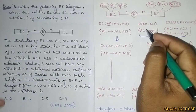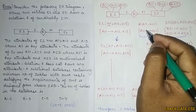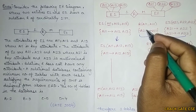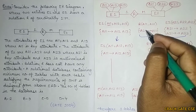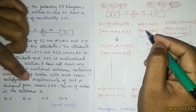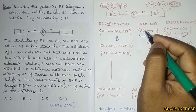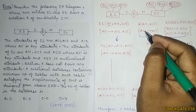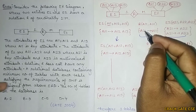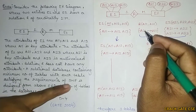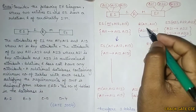The question asks: given a relational database containing the minimum number of tables, with each table satisfying the requirement of 3NF, how many minimum number of tables are required if we convert or minimize the ER diagram such that every table satisfies the condition of 3NF?